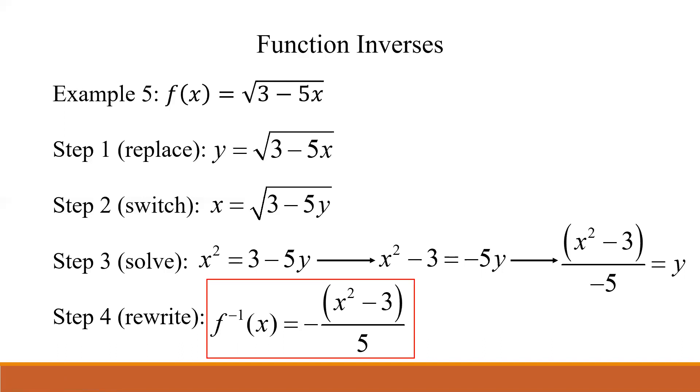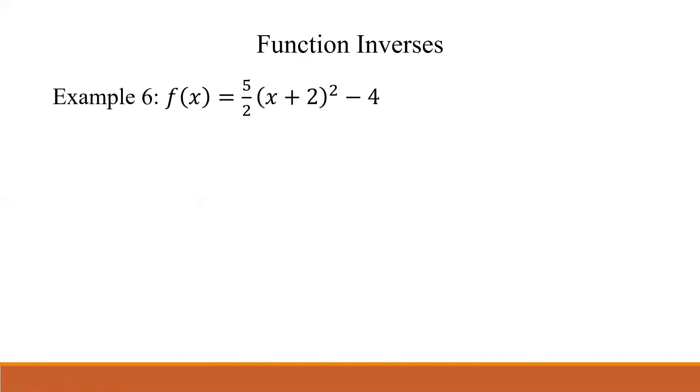Now, I've got one last example. And again, I'm going to encourage you to pause the video real fast, work through this one on your own. This one has quite a few steps on the solving bit. But go ahead and pause the video, try to do this on your own, and get that together. We have f(x) = (5/2)(x + 2)² - 4. You should know, again, nothing changes with regard to process. Replace the f(x) with y, switch the x and y, and then just start getting the y by itself, piece by piece.